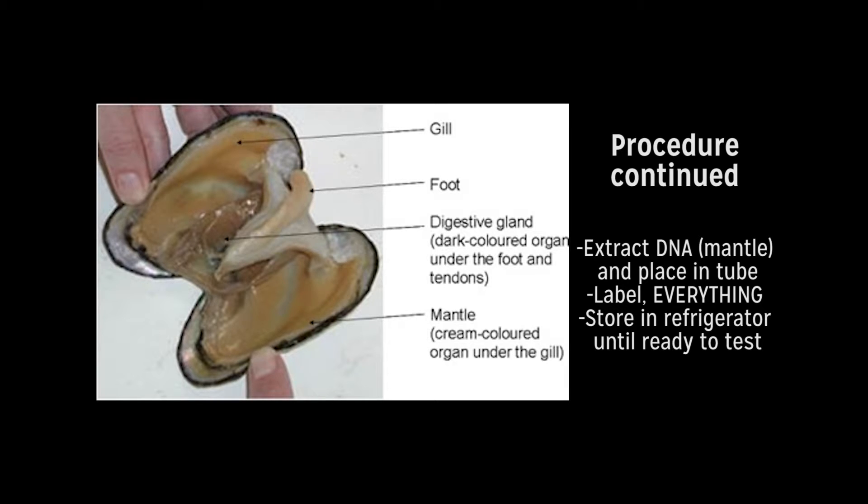We placed this sample into 1.5 milliliter test tubes. Then, we filled the tubes with distilled water. As we placed the mantle in the tubes, we labeled each tube with their sample number and the location. We placed the samples in a refrigerator in the lab we were using until we were ready to test the samples.